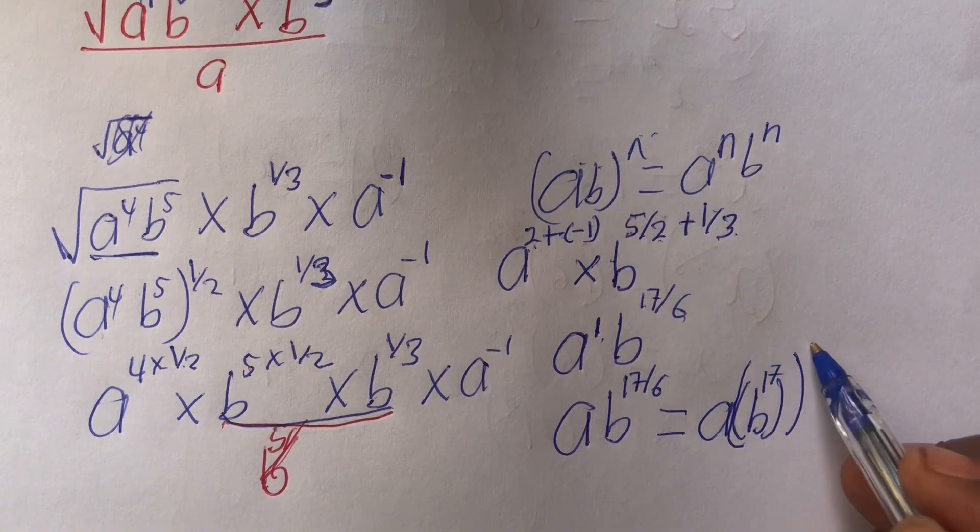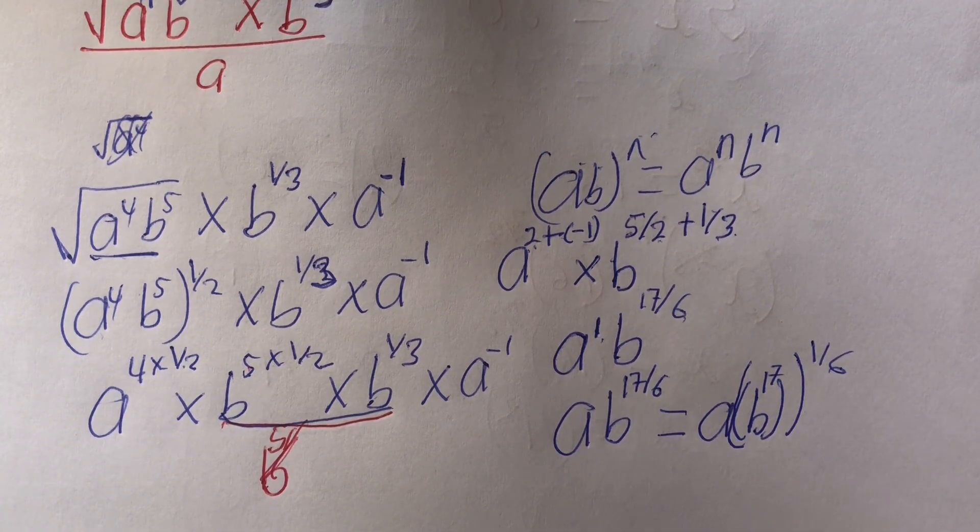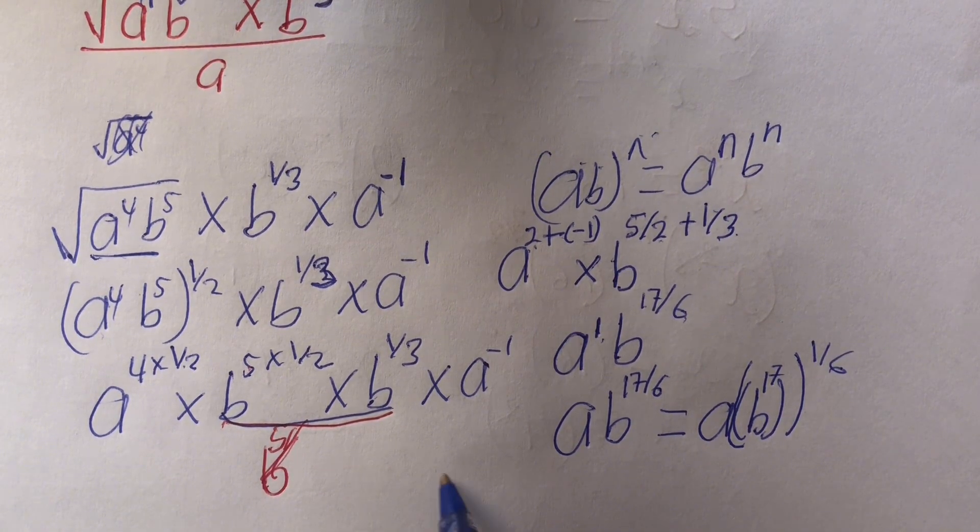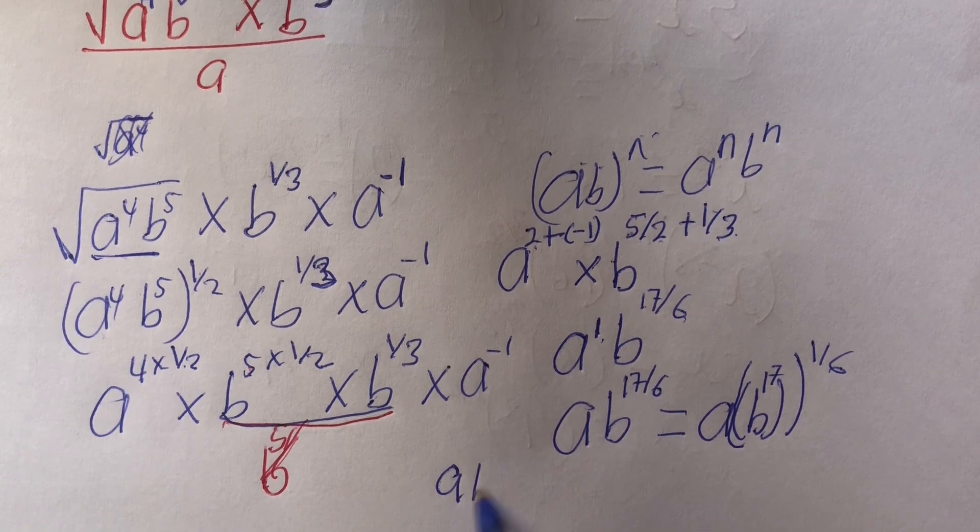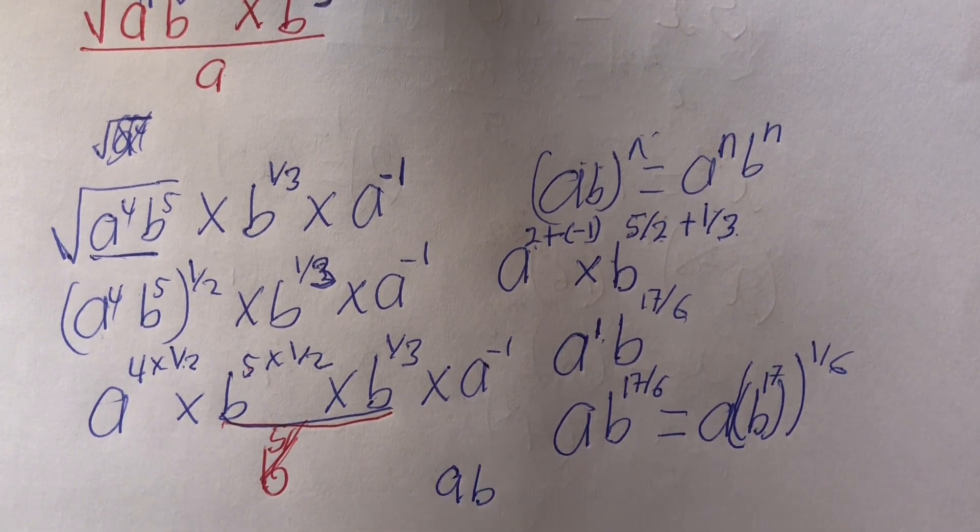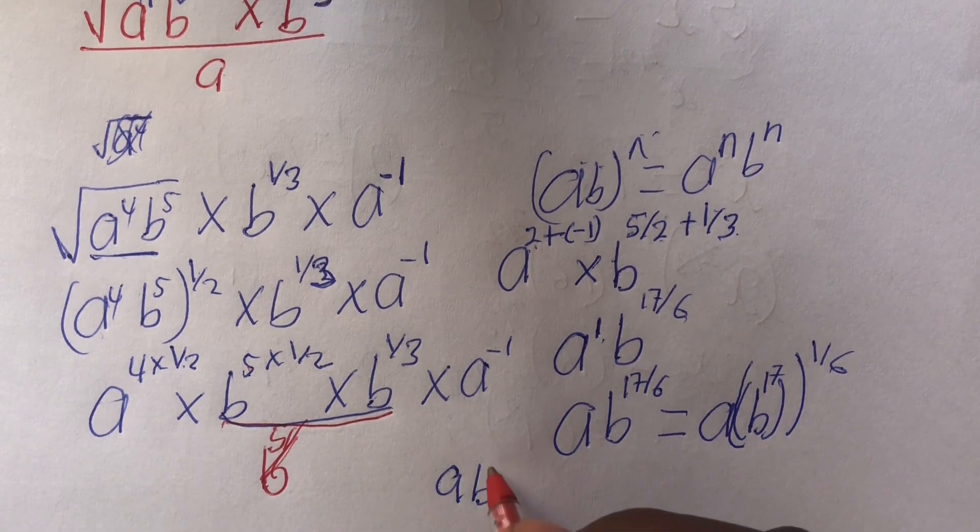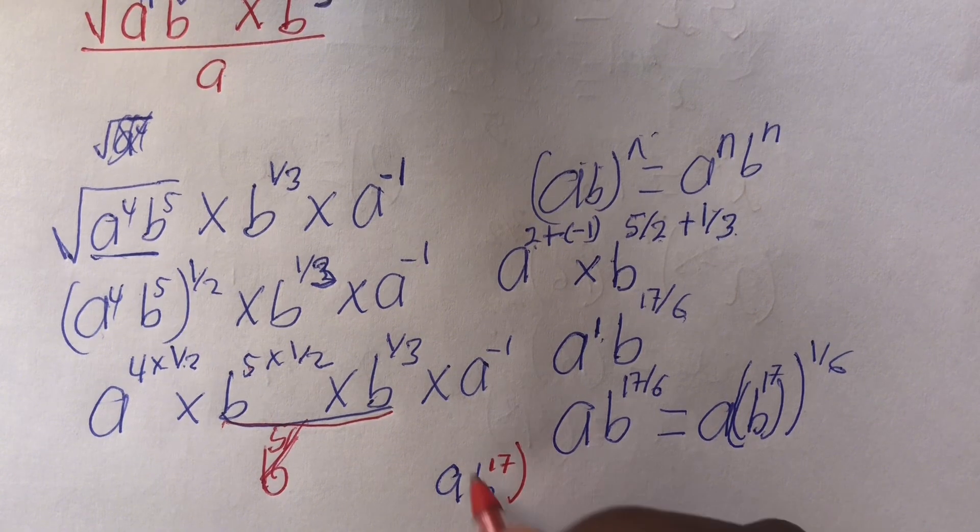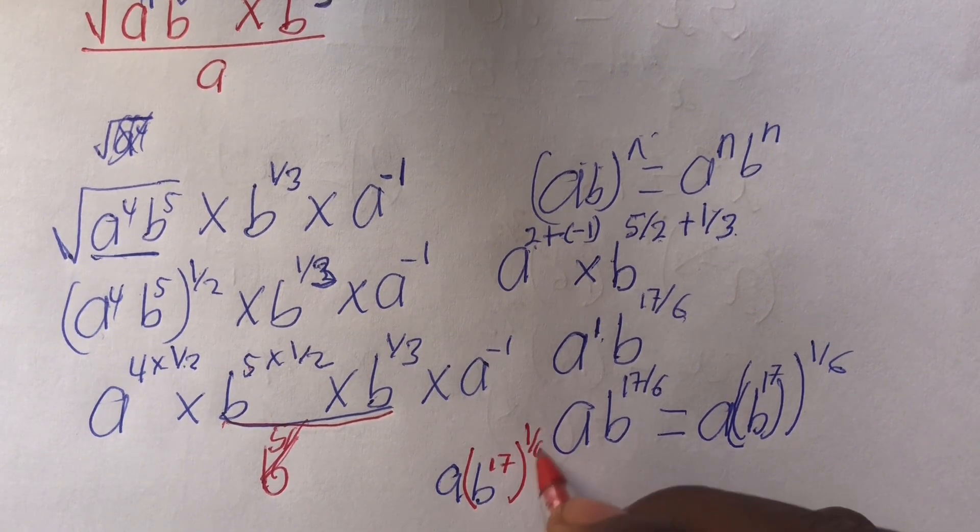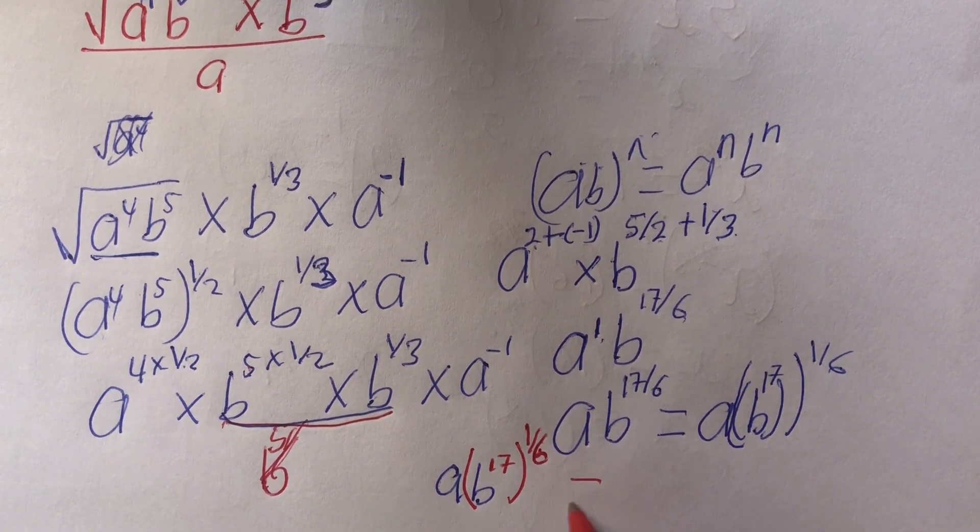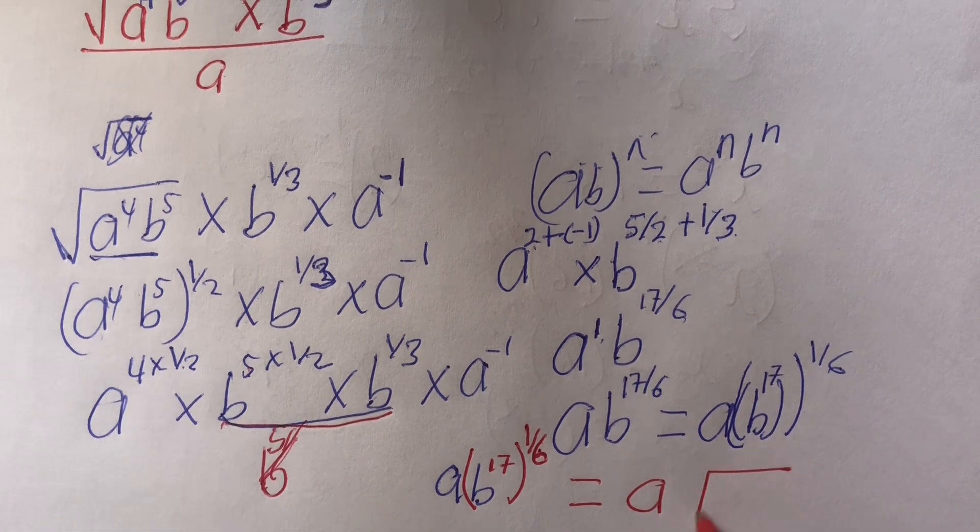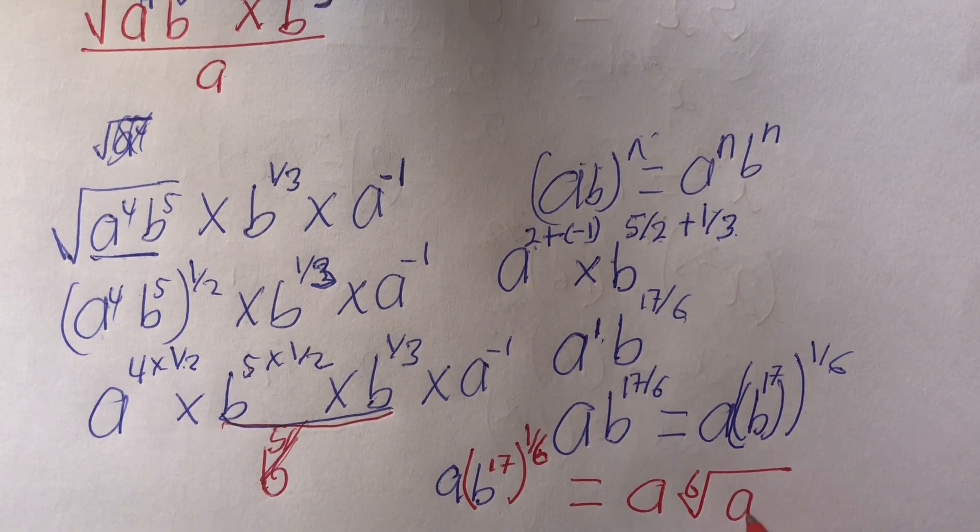Power 1 out of 6. Let me write it here. That is a times b, then this b has power 17 and another power 1 out of 6. So this can be written as a, the 6th root of b power 17.